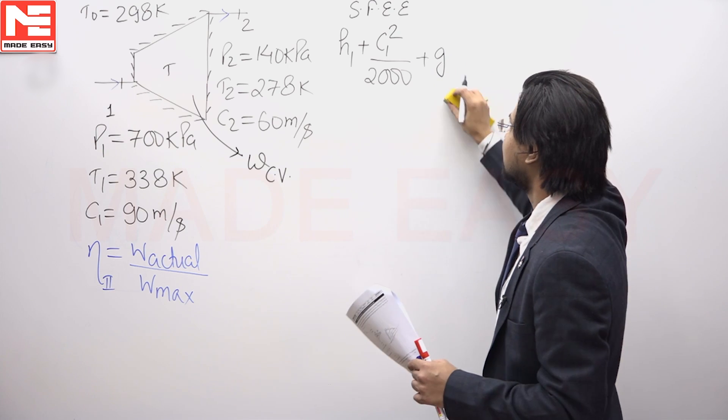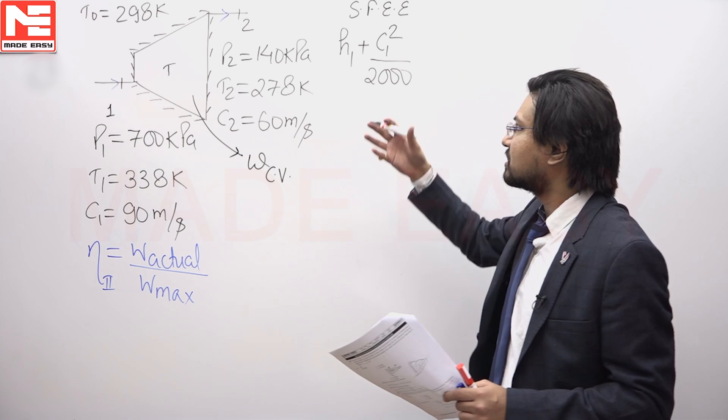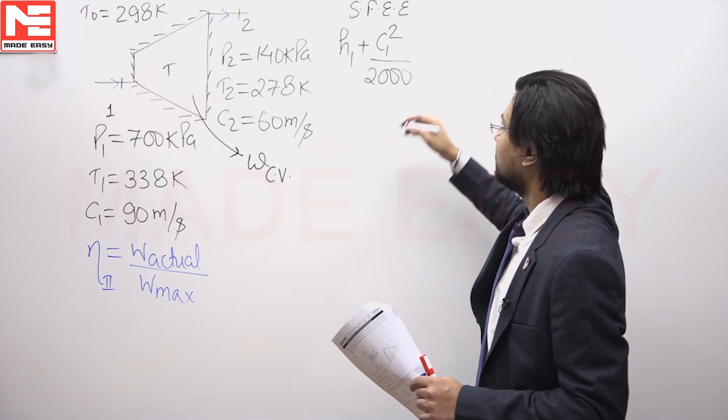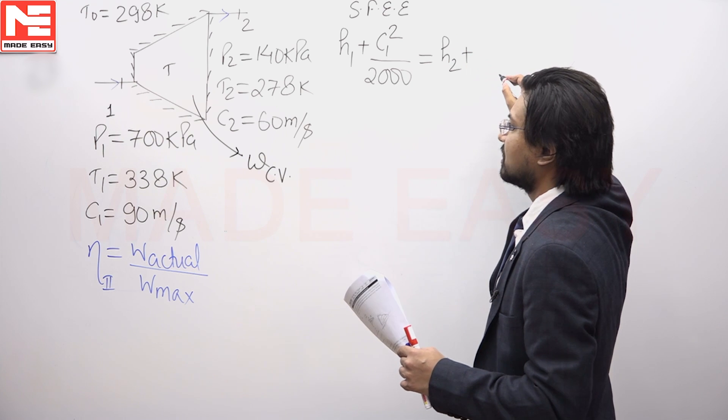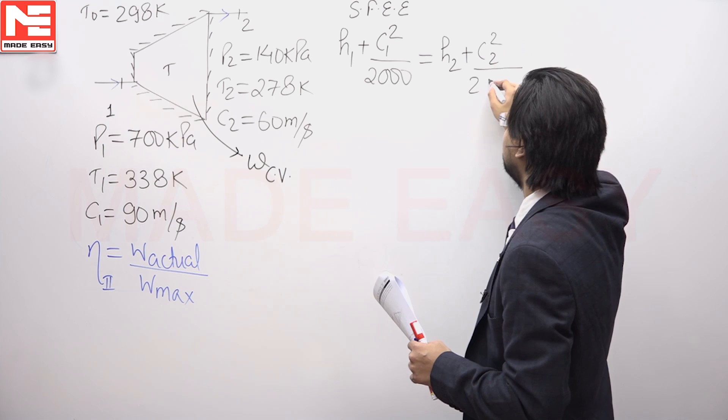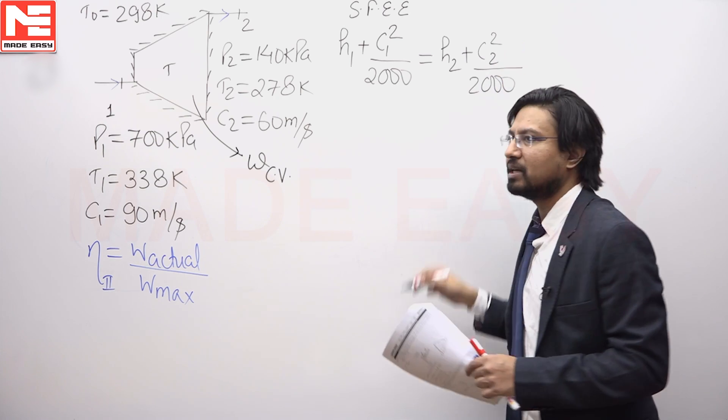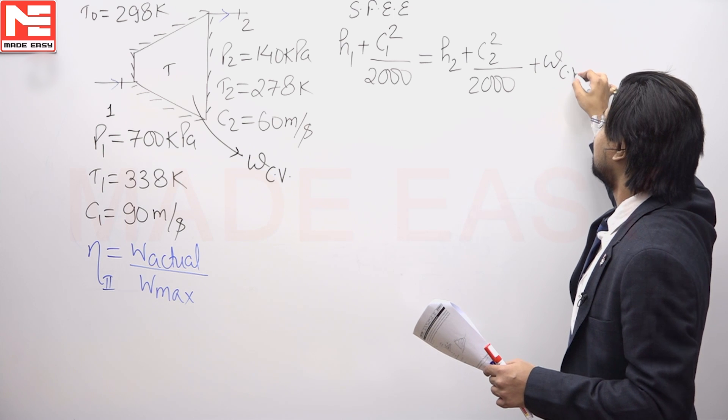I will ignore the potential energy terms plus Q. Now, it is adiabatic, so Q will be 0. This equals H2 plus C2 square by 2000 because I want to write it in kilojoule per kg plus the work developed that is WCV.